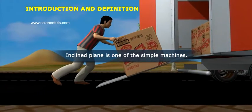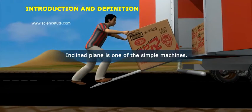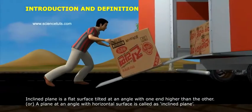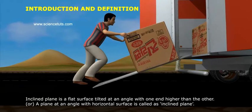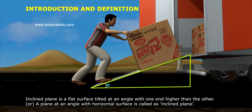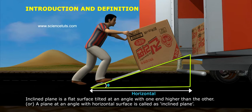Inclined Plane is one of the simple machines. An Inclined Plane is a flat surface tilted at an angle with one end higher than the other, or a plane at an angle with the horizontal surface.